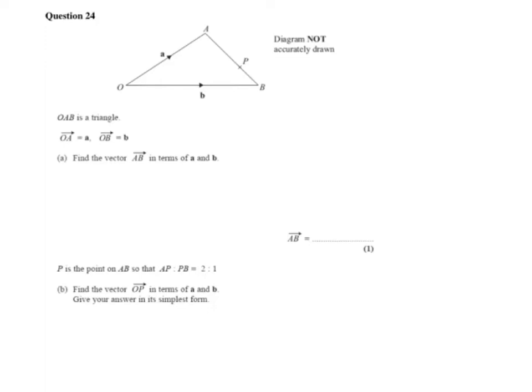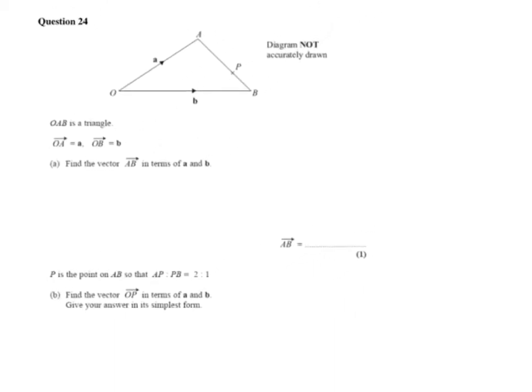So question 24. OAB is a triangle. OA equals vector A, and OB equals vector B.